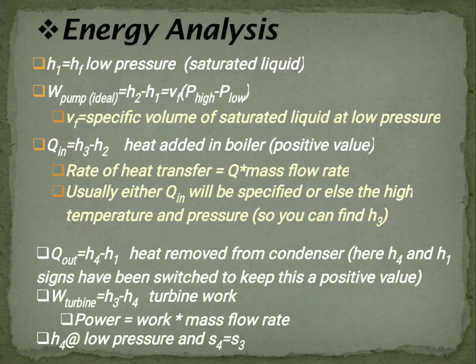Next is heat rejection, that is Qout. That is taking place in condenser. And here the formula for Qout will be equal to H4 minus H1, the signs have been switched. Next is work done in turbine. It will be equal to H3 minus H4, that is turbine work. And if we need to calculate the power, then we know that power is equal to work times mass flow rate.